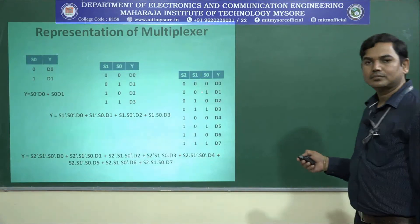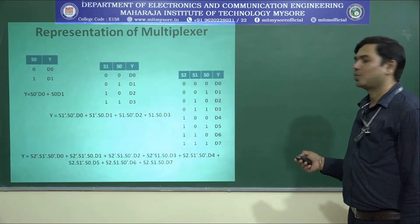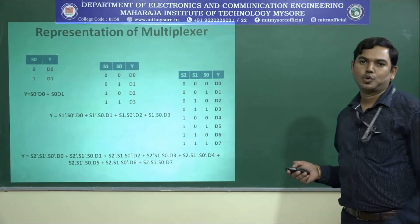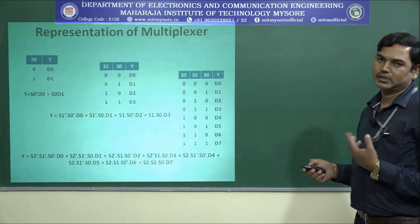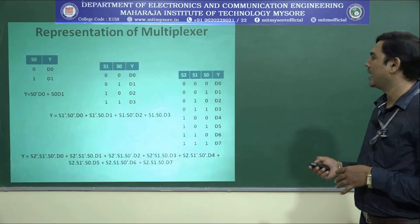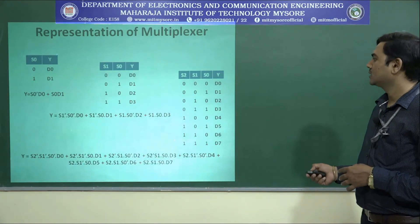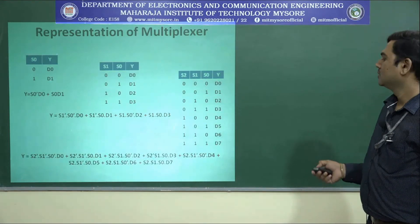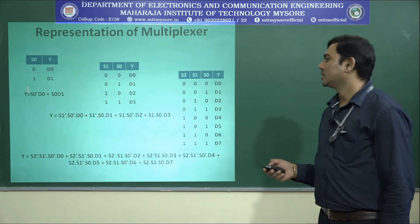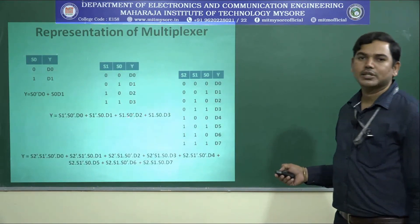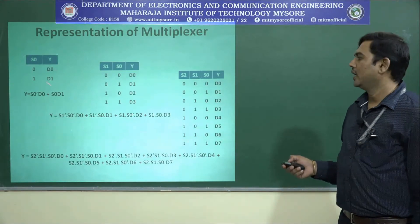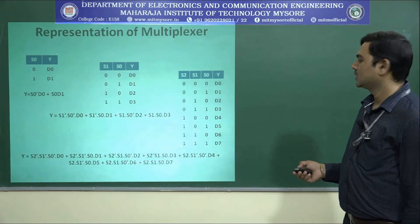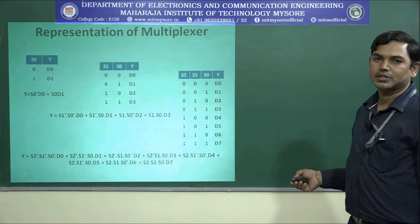For an 8-to-1 multiplexer, there are 3 select lines, since 2 to the power 3 is 8, giving 8 input lines, 3 select lines, and 1 output line. So these are the function tables and logical equations of the 2-to-1 multiplexer, 4-to-1 multiplexer, and 8-to-1 multiplexer.